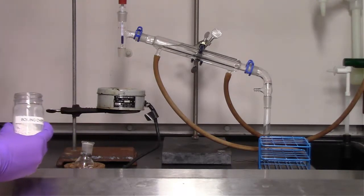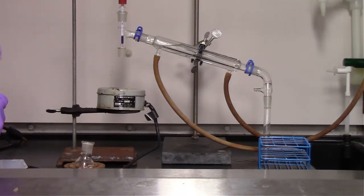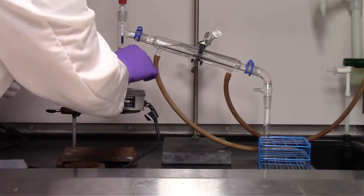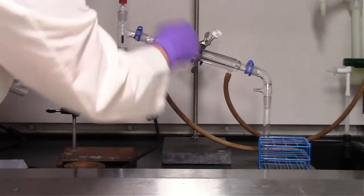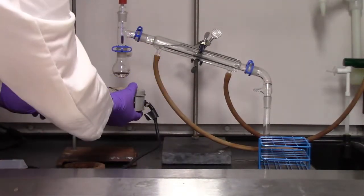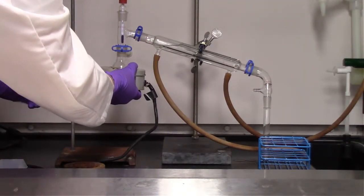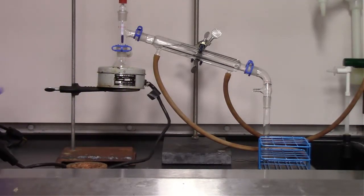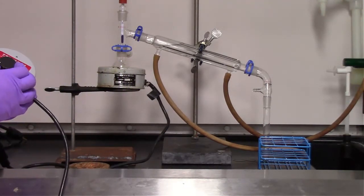Now we're getting one boiling chip, putting it in the round-bottom flask so that our liquid, mostly cyclohexanol, doesn't bump or essentially have a small explosion within the round-bottom flask and all shoot over into the collection flask, which defeats the purpose of doing a simple distillation.